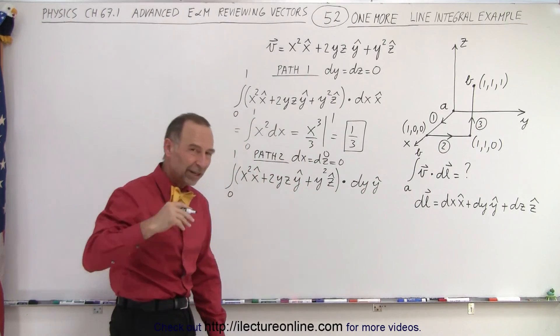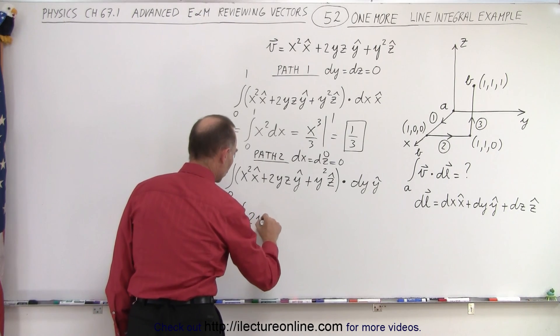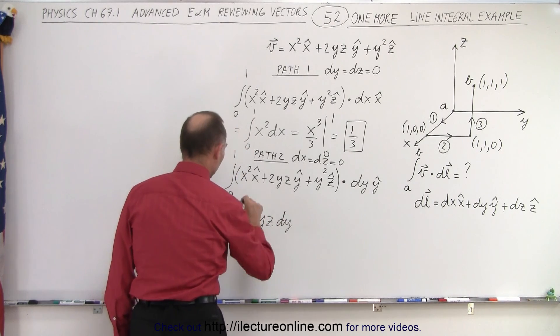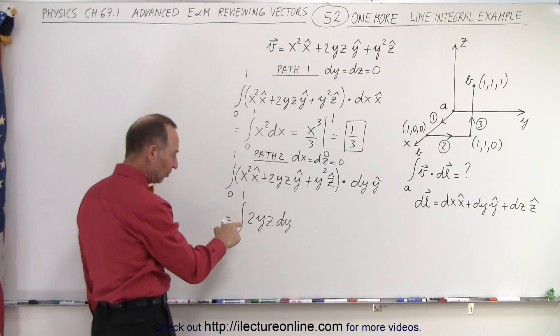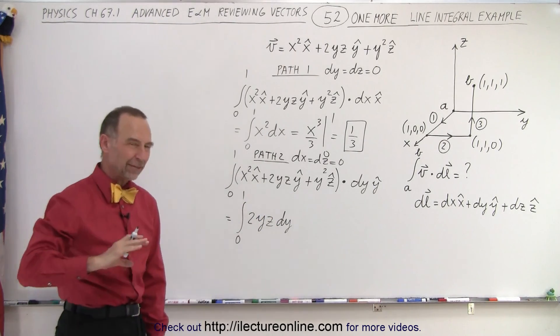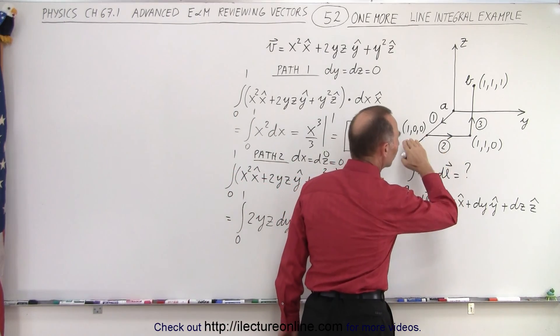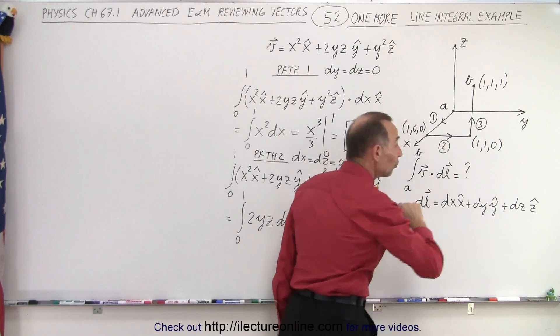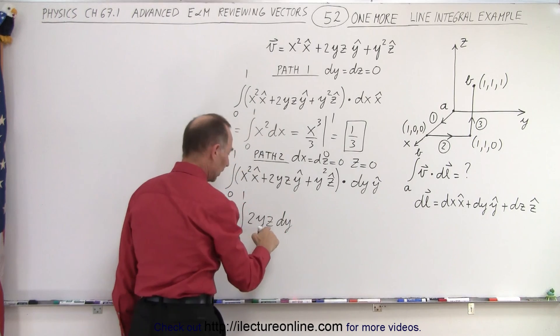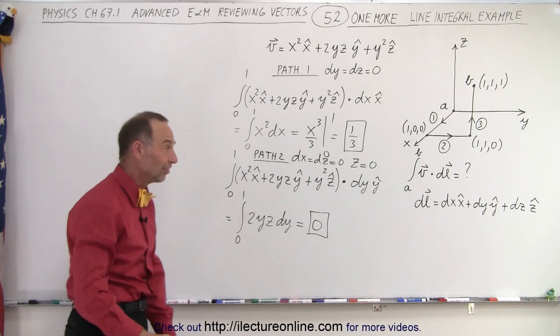So this simply becomes dy in the y-direction. We're only going to concern ourselves with the second term of the vector. So this is equal to the integral of 2yz times dy from y equals 0 to 1. Now here we have to notice that we have a y and a z times dy, so we have to get rid of the z. Notice that in this case z is equal to 0 because we're along the xy-plane. So if z is equal to 0, then we replace it by that, we get 0, and we don't have to integrate.